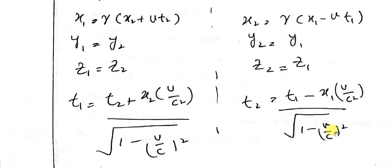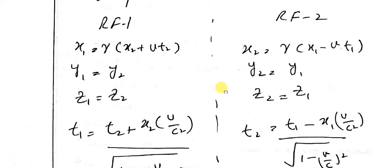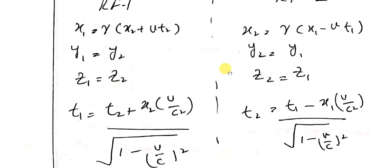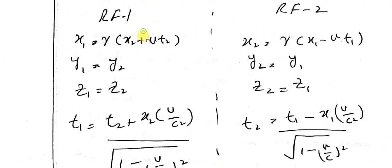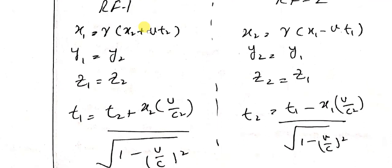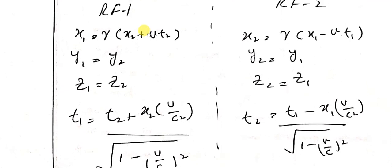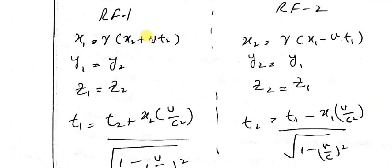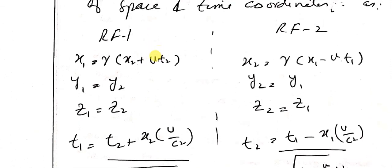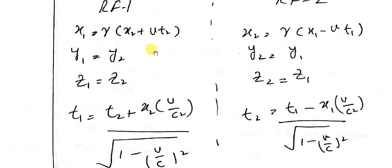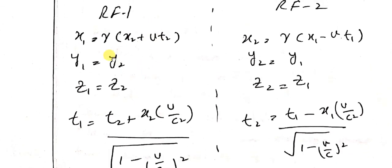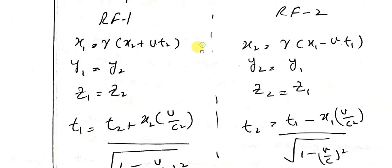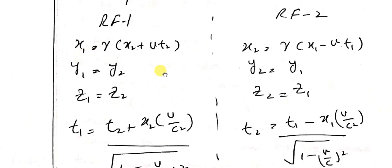So that is how we have the Lorentz transformation equations. We are now ready to transform other parameters within the coordinate system as well. These are the Lorentz transformations for space and time. With this we reach the end of our topic. Thank you.